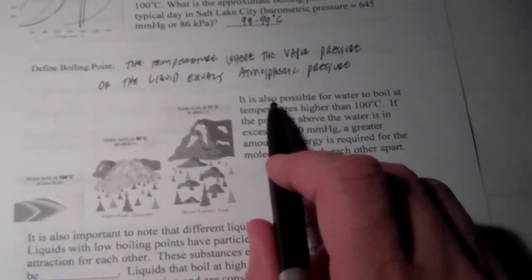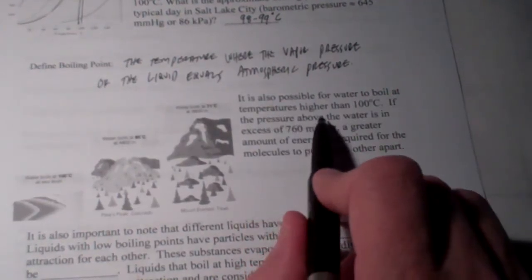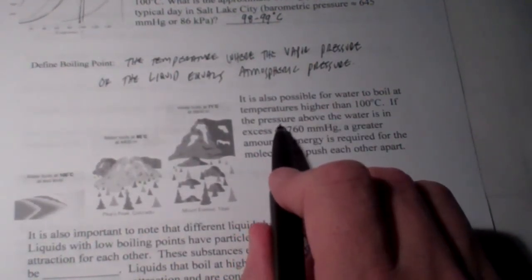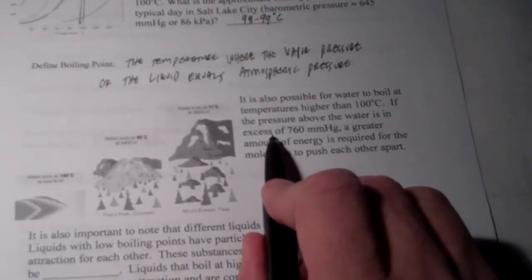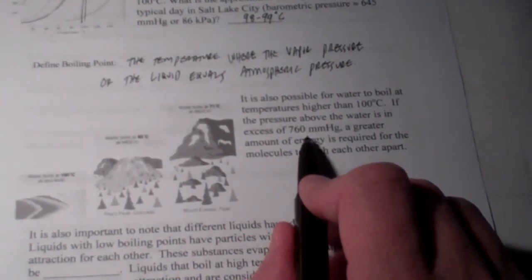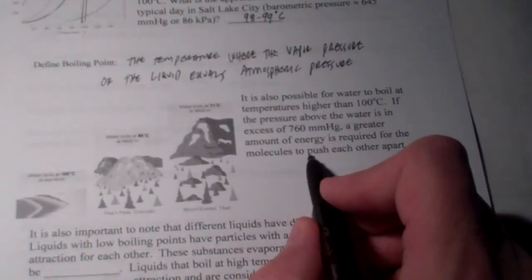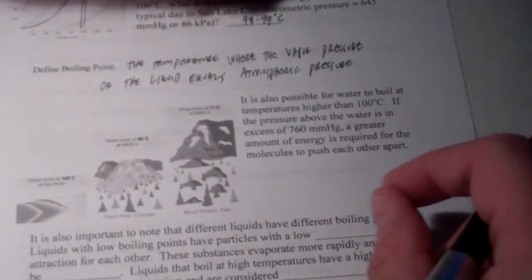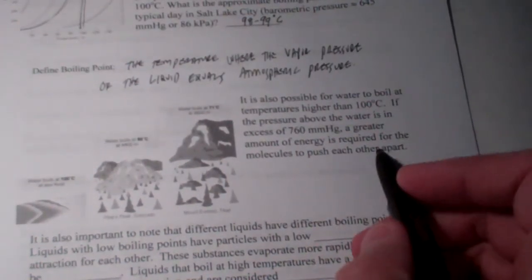It's also possible for water to boil at temperatures higher than 100 degrees Celsius. If the pressure above the water is in excess of 760 millimeters of mercury, more energy is required for the molecules to push apart one against one another, forming a gas bubble.